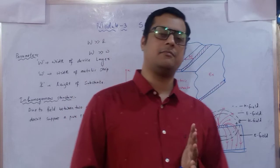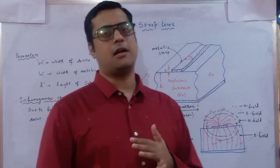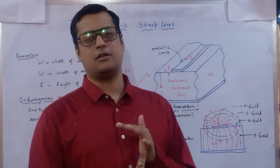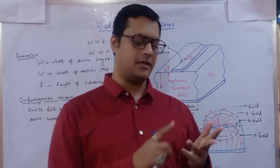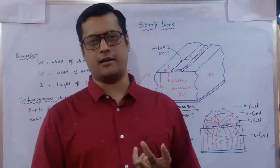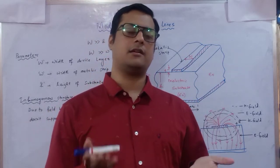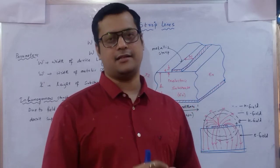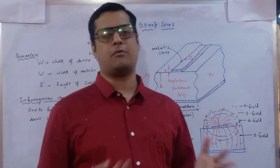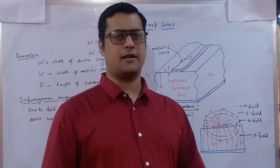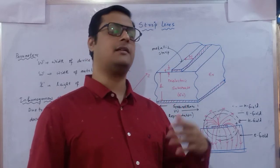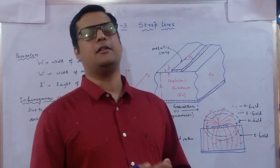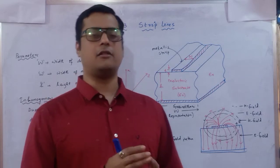The characteristic impedance of a transmission line depends on its lumped parameters. We have seen coaxial transmission lines, two-wire lines, and three-wire lines. From those, we identified the RLGC parameters, characteristic impedance, propagation constant, phase constant, and attenuation constant.